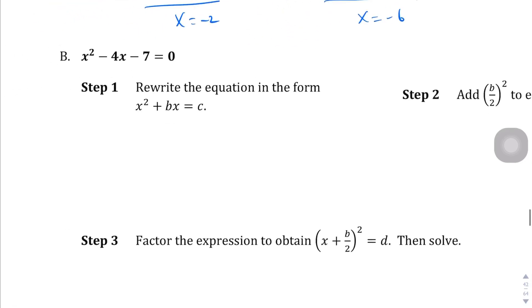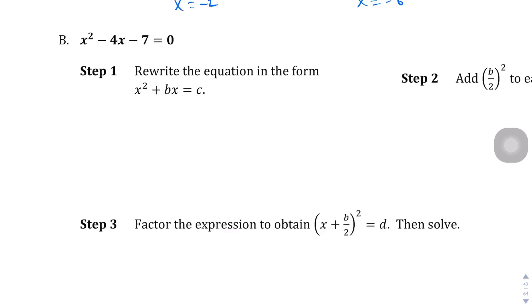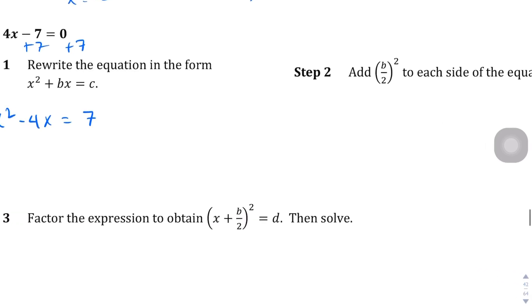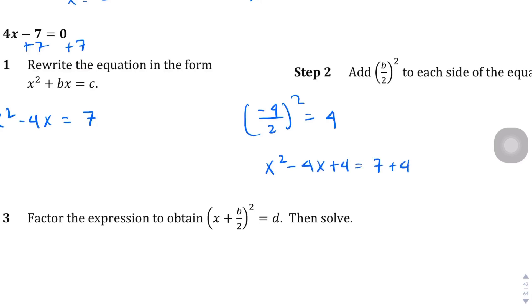Question B. There's nothing to factor out here, so we rewrite the equation by adding 7 to both sides, ending up with x squared minus 4x equals 7. Then we complete the square: negative 4 divided by 2 is negative 2, and negative 2 squared is 4. So we add 4 to both sides, giving us x squared minus 4x plus 4 equals 7 plus 4, which is x squared minus 4x plus 4 equals 11.